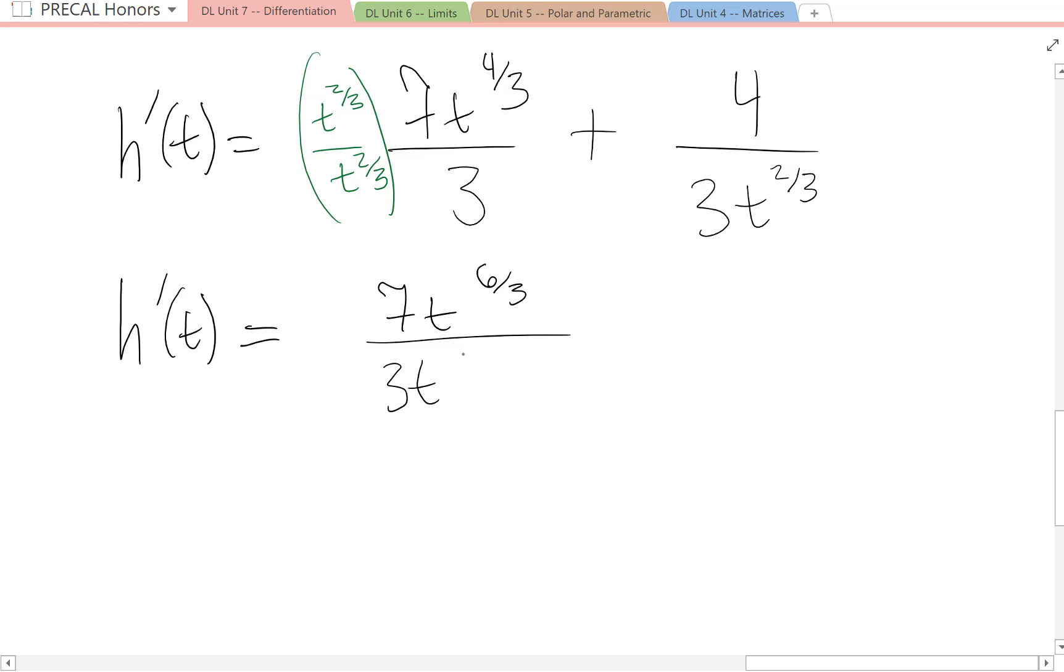t to the three times t to the two-thirds in the denominator, plus four over three t to the two-thirds. Combine your numerators. Seven t, six over three is two, plus four over three t to the two-thirds.